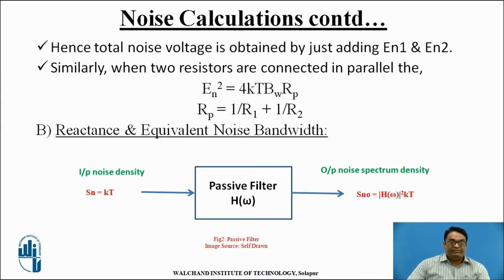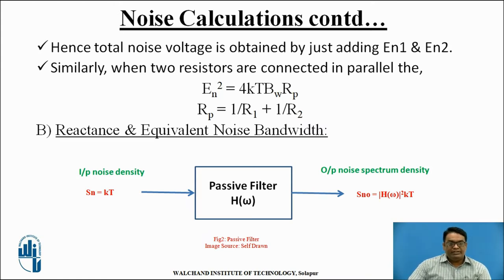Similarly, when two resistors are connected in parallel, the noise voltage is given by EN² = 4KT × BW × RP, where RP is the total resistance connected in parallel, given by 1/R1 + 1/R2. We just put the value of RP into the above equation of total noise voltage.